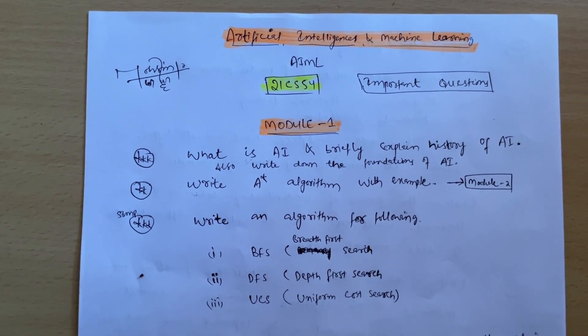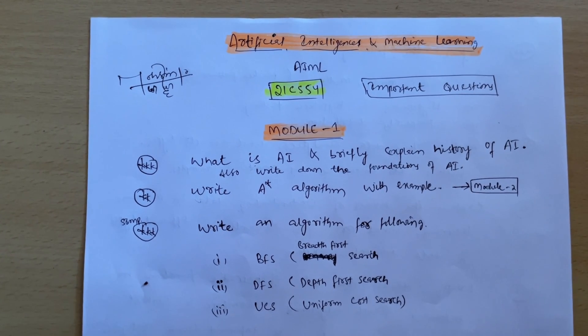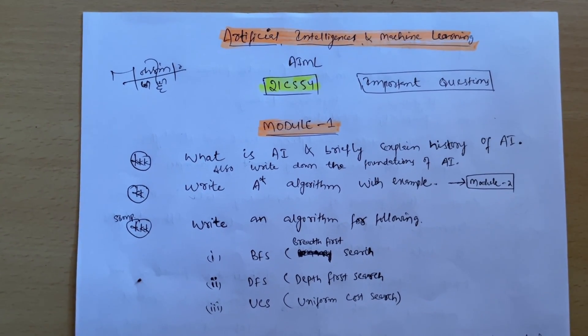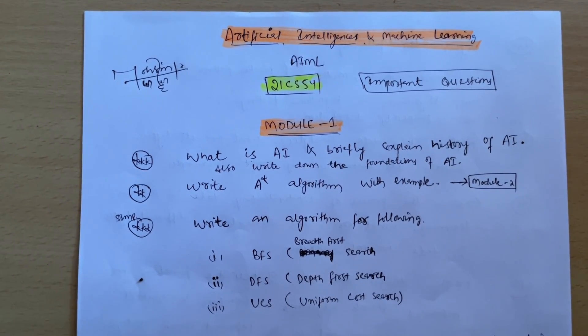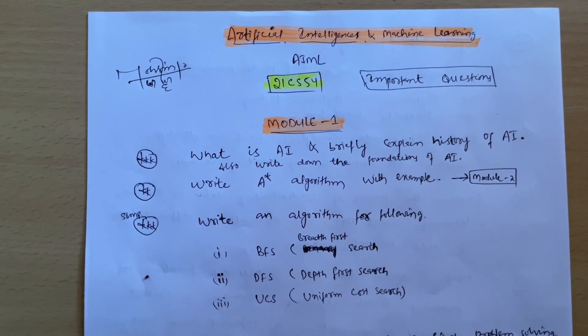Hello everyone and welcome back to another important questions video for the particular subject that is Artificial Intelligence and Machine Learning. Subject code is 21 CS54. As you already know, the syllabus is totally different from the 18 scheme.